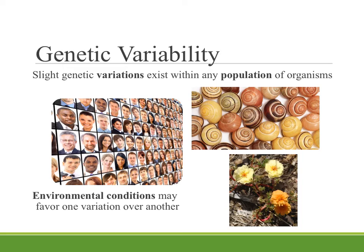In order for natural selection to work, it depends on genetic variability. Genetic variations — differences in DNA that lead to slight differences in the way a particular trait is expressed — can be seen in any population of organisms. We have all these different snail shells here, and you can see there's a variety of colors. They're all the same size and shape, the same species of snail, but they just have different coloration in their shells.